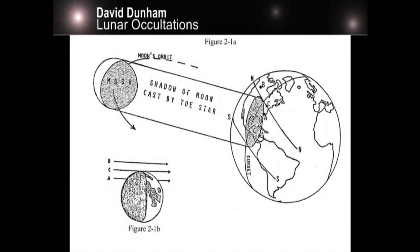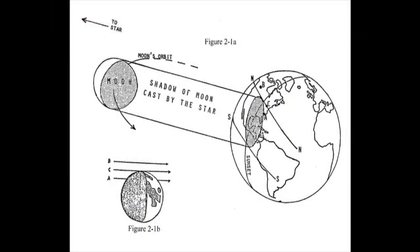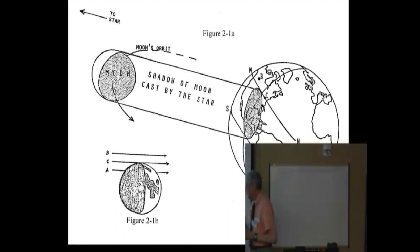This just shows the basic geometry of a lunar occultation. You've probably seen this before, but mostly in observatories we'll see a total occultation where the star will disappear and then reappear about an hour later on the other side of the moon. Usually you do these during the waxing phases when the star disappears on the dark side of the moon.